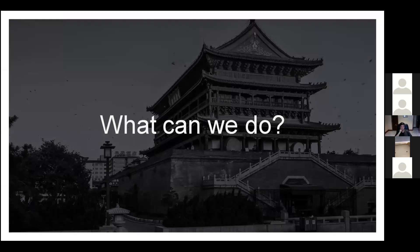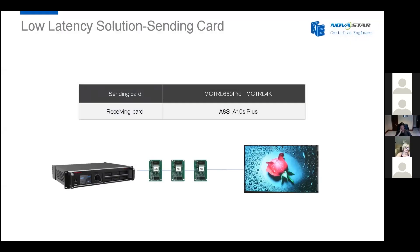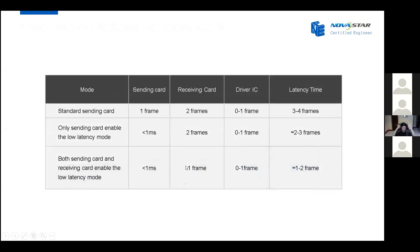Novastar has worked out a low latency solution to help solve these problems. For the sending card system low latency solution, we have the MCDRL 660 Pro and MCDRL 4K — those two products support the low latency feature. For the receiving card, we need to use our high-end receiving cards: the Armor Series A8S and A810S Plus. The system structure remains the same: sending card, receiving card, then LED screen. Here is a chart showing more details about the latency improvement.